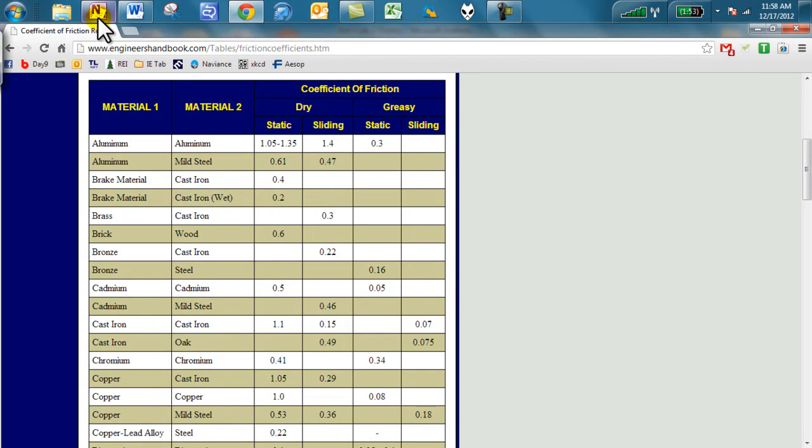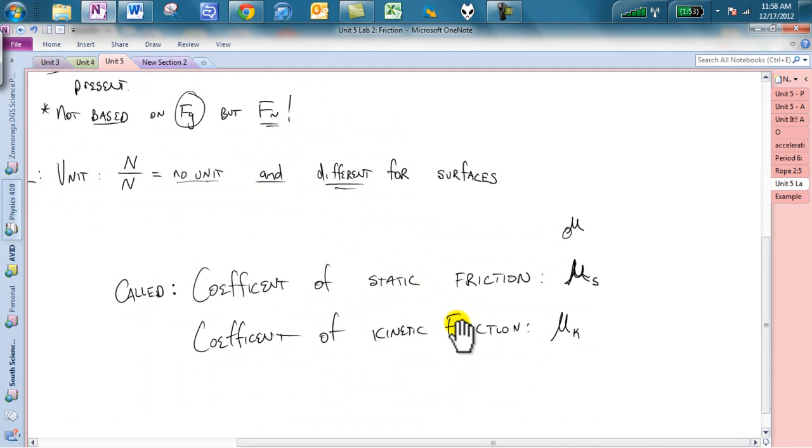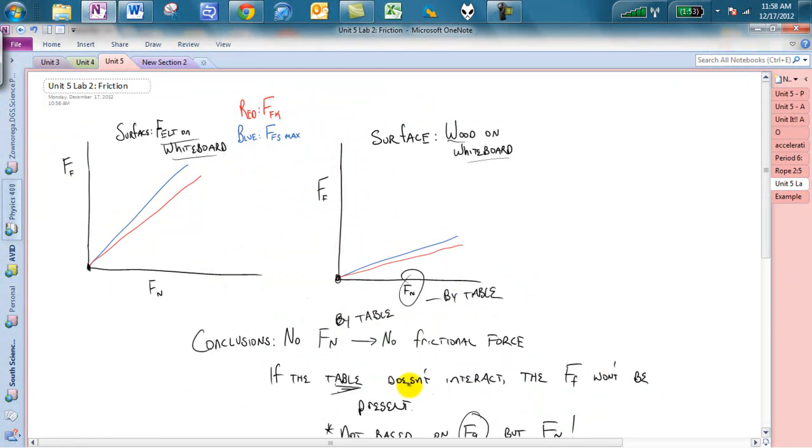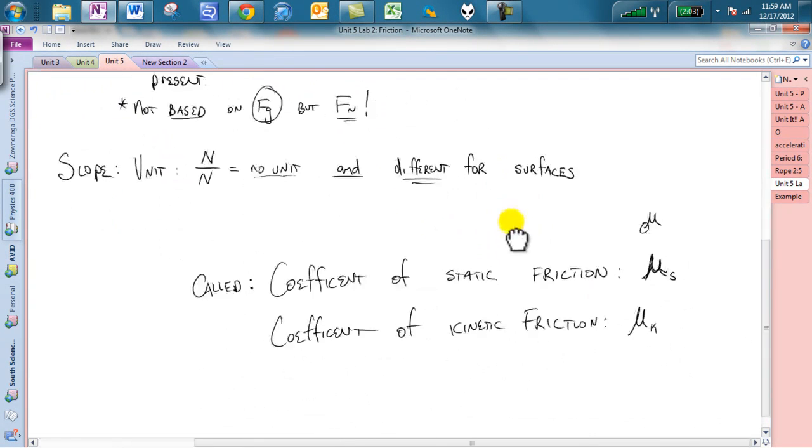And we can go back into our data and see that if we were to go back on over here, you will see that for these pieces on over here, the wood on the whiteboard, the wood slides a lot easier than the felt, and so you will see that the slopes are a little bit lower, versus the felt on the whiteboard, you will see that the slopes are a little bit higher. So, these are for every single surface. What you guys just determined was basically two more coefficients that can go into that book. You would say felt on a whiteboard.